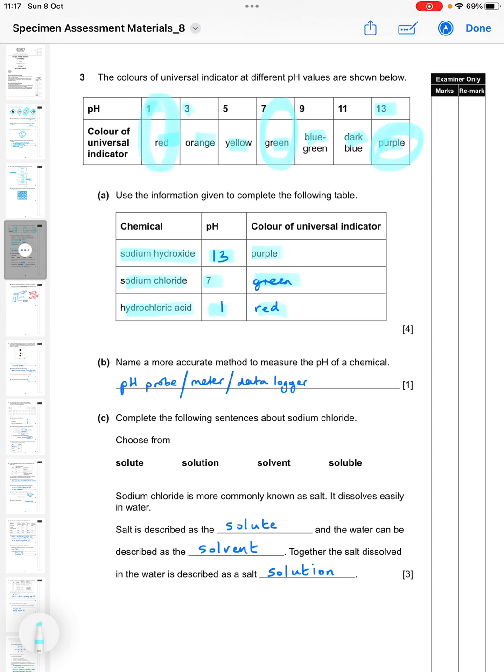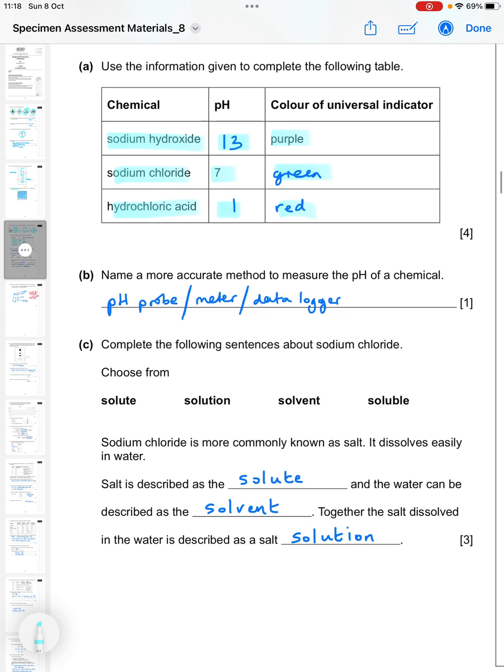Name a more accurate method to measure the pH of a chemical. Any of these: you could have a pH probe, you could have a pH meter, or you can have a data logger.